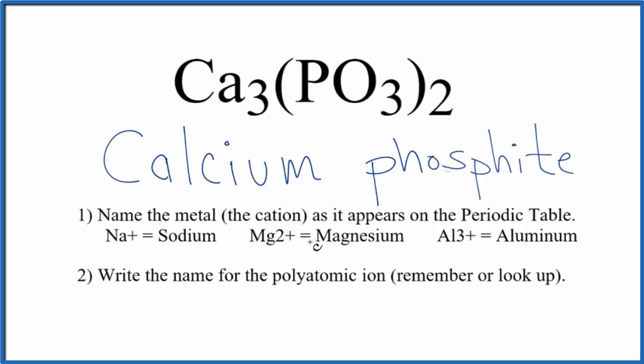So the name for Ca3(PO3)2 is calcium phosphite. The reason we have three calciums and two of these phosphite ions is: calcium on the periodic table is in group two, it's 2+, and the phosphite ion has a 3- ionic charge.